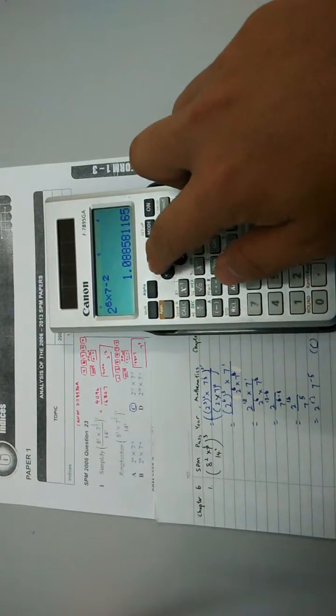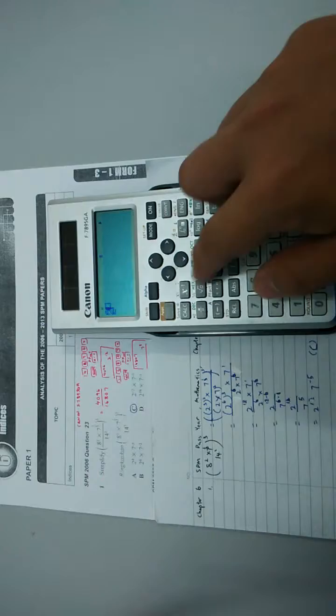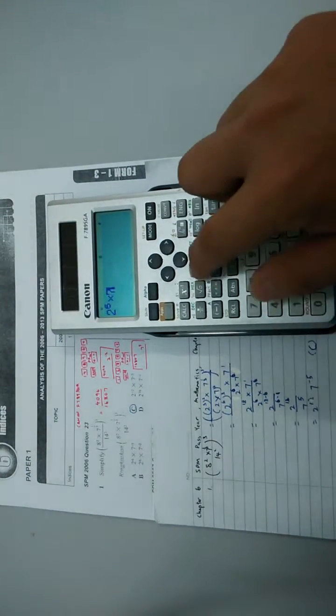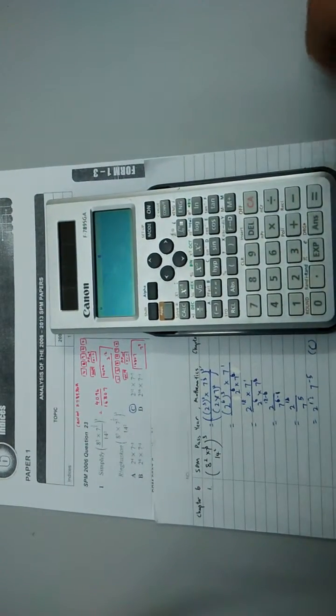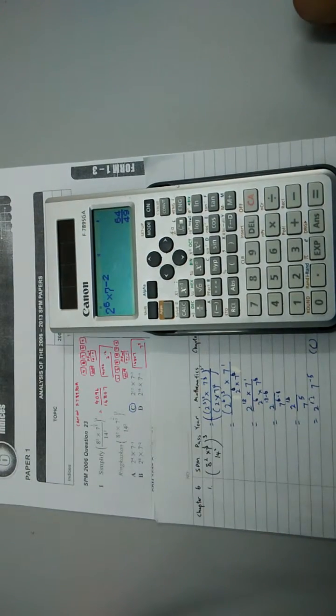Oh no, I keyed wrongly. So it's 2 to the power of 6 multiply with 7 to the power of negative 2. And 64 over 49.